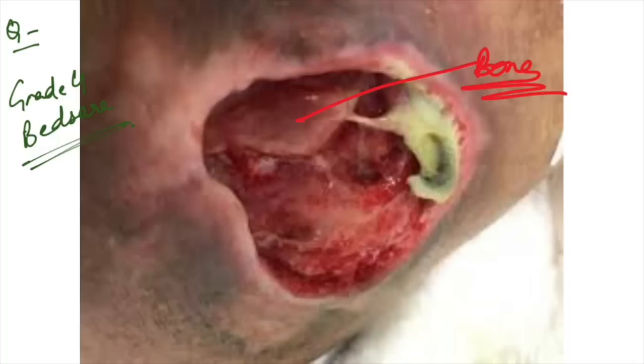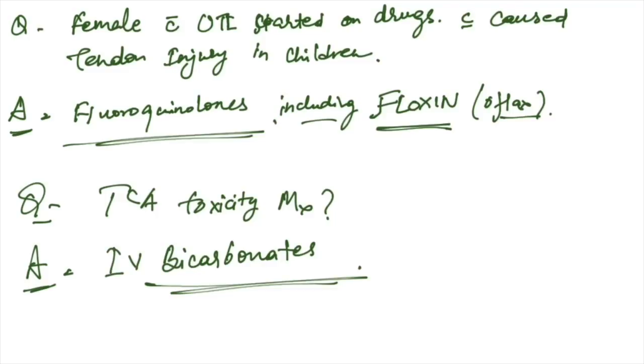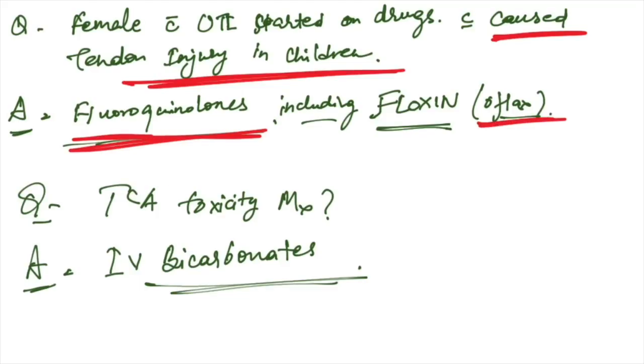Female with UTI started on drugs for UTI which caused tendon injury in children. Tendon injury is caused by fluoroquinolones including ofloxacin. Fluoroquinolones are responsible for tendon injuries, causing drug-induced tendonitis or tendon injuries.